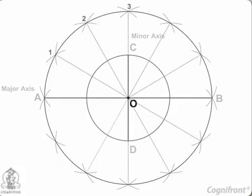Draw lines joining these points with the center O and cutting the minor axis circle at points 1', 2', etc.